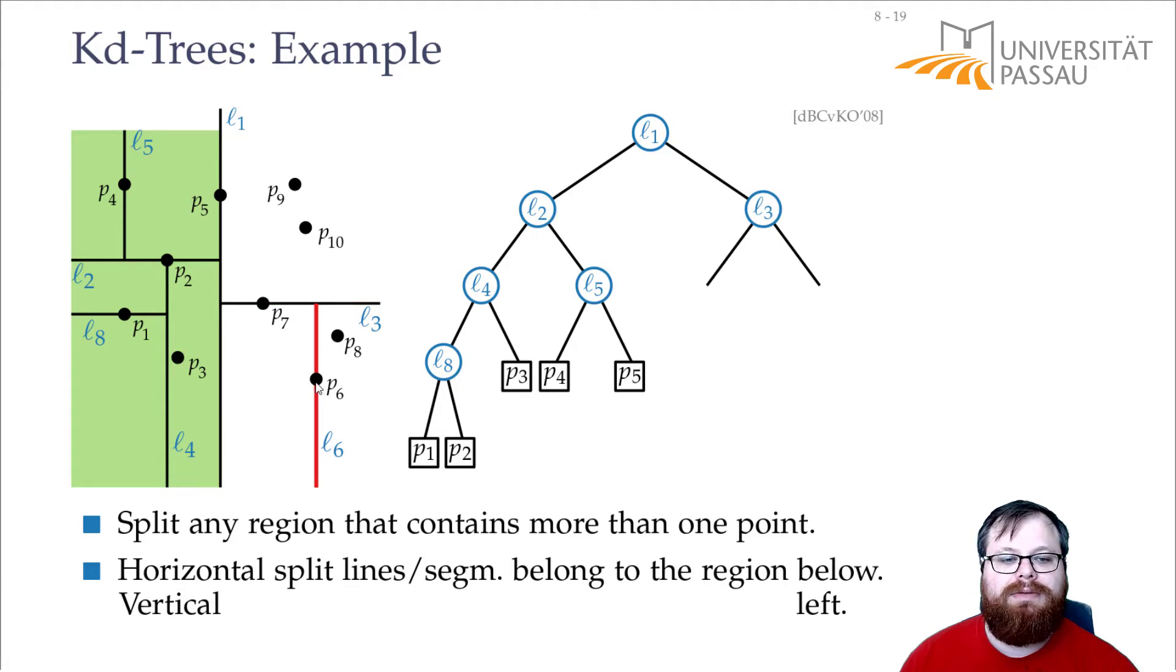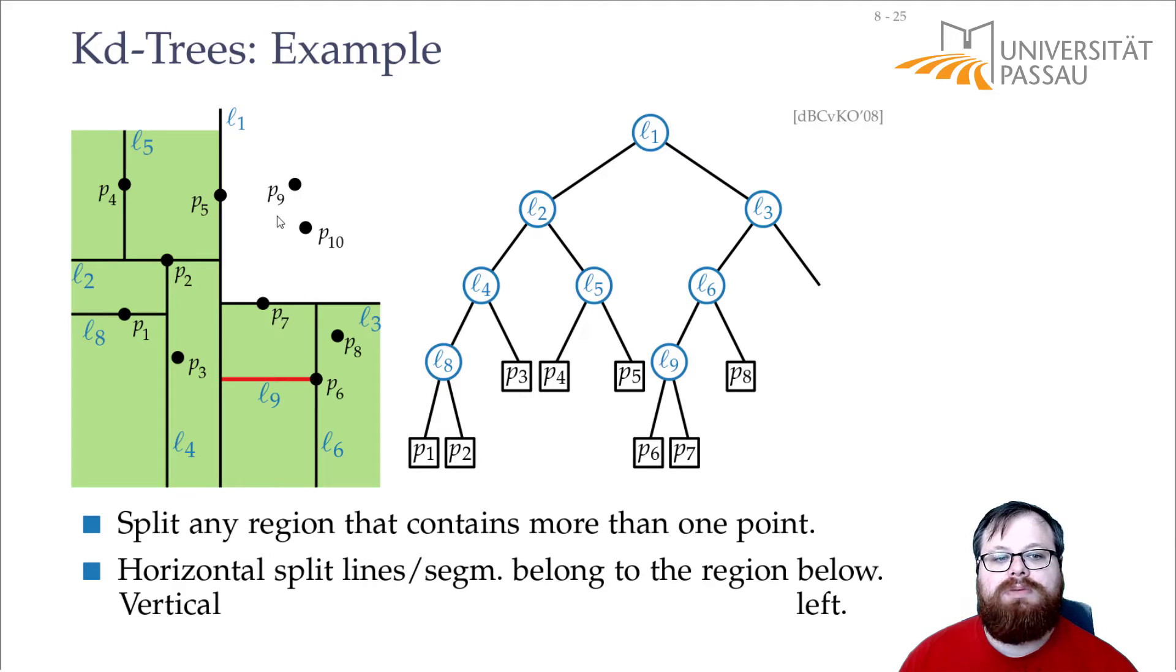This is a horizontal split, and we do a vertical. Now we have a horizontal, we have these three regions, and one more split here for these two points, which gives us two more regions.